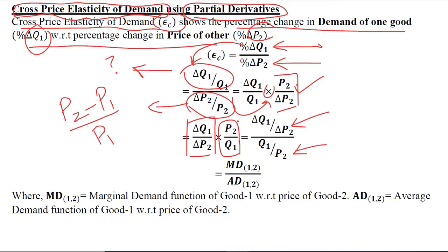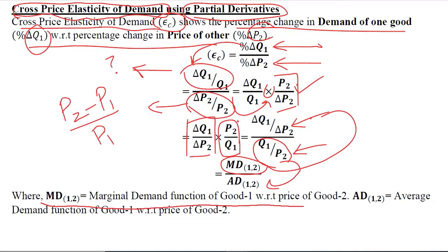The terms in the numerator represent the marginal demand function of good one with respect to good two, and the average demand function is in the denominator, where the ratio of the quantity demanded of the first good is taken with the price of the second good. So we have the marginal demand function of good one with respect to good two, and the average demand function of good one with respect to good two.